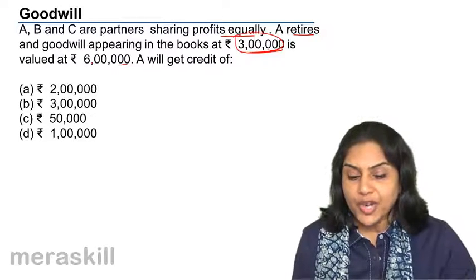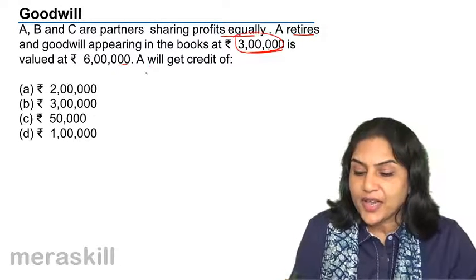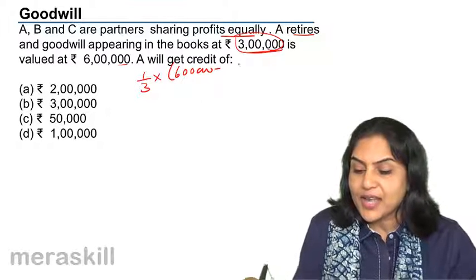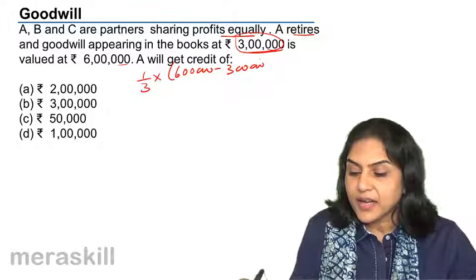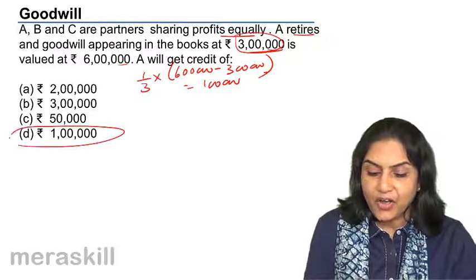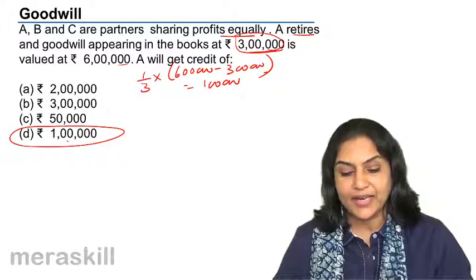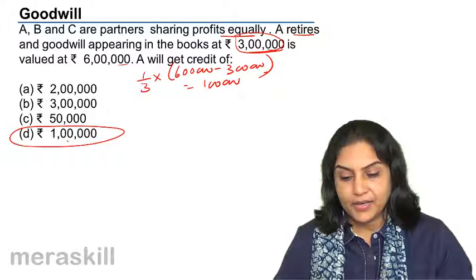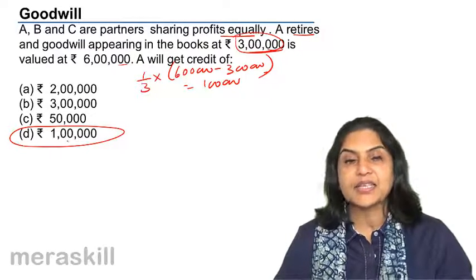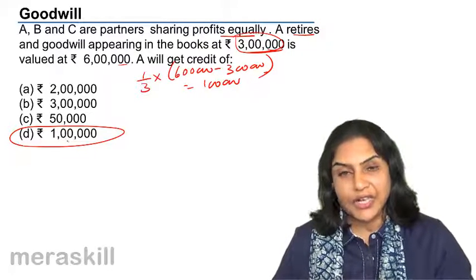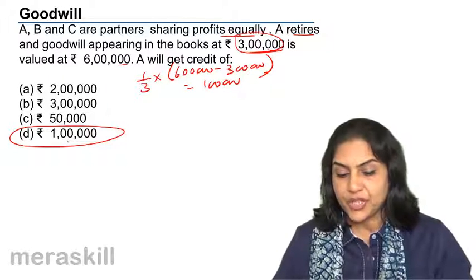What is A's share in that? A's share is one third of the unrecorded goodwill: 6 lakh minus 3 lakh equals 3 lakh, and one third of that equals 1 lakh. So A will get a credit of rupees 1 lakh, and B and C's accounts would be debited with 50,000 each.